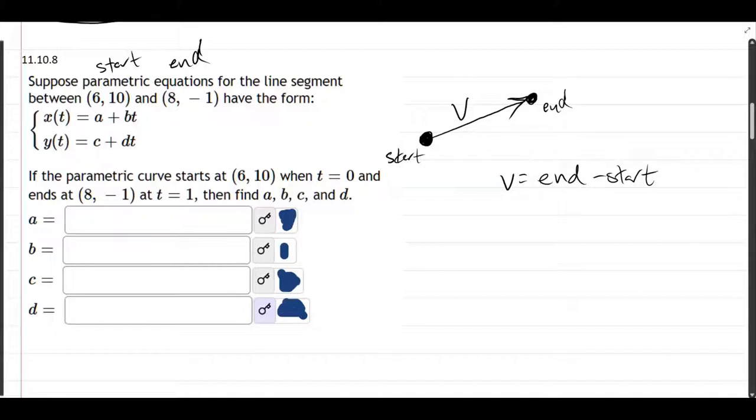And the equation for the line, I'll write it as L(t), it's going to be v times t plus start. This is just going to be v times t right there. Well, technically this is a function of t, but it's just the vector v times t. So let's go ahead and compute these pieces.